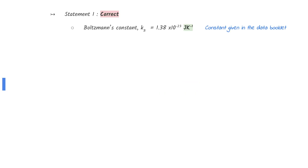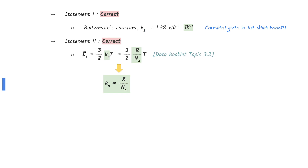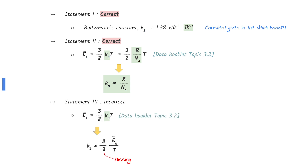Statement one is correct. The unit for Boltzmann's constant is joule per kelvin, which can be found in the data booklet. Statement two is correct. From the equation given in the data booklet, we can see that Boltzmann's constant equals the gas constant divided by Avogadro's constant. Statement three is incorrect. The same equation can be rearranged to make Boltzmann's constant the subject, but the question is missing the two over three factor.